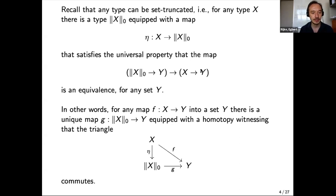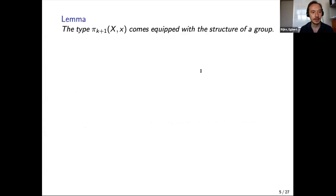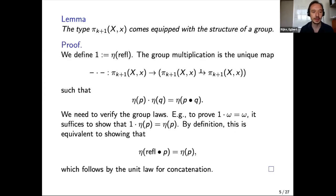So that's the set truncation recalled. We said that π_k are groups at least for k ≥ 1, because for k = 0 it's just a set. Let's show that using the universal property. First we define the unit of the group: for k ≥ 1 it's a loop space so we have refl, and since it's truncated you have to apply η to make it type-check. So this is the unit of the group.